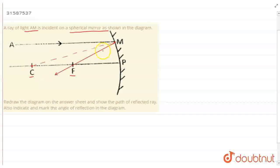If this is the normal, then this angle is my i and this angle is my r. Angle i is equal to angle of incidence and r is equal to angle of reflection.